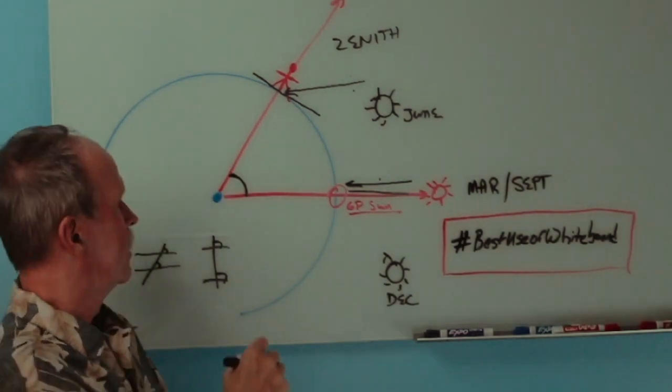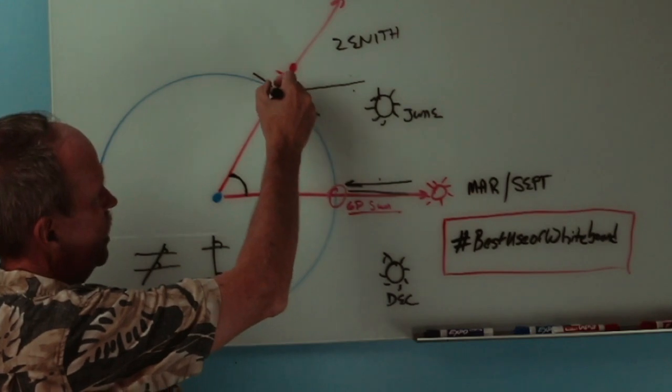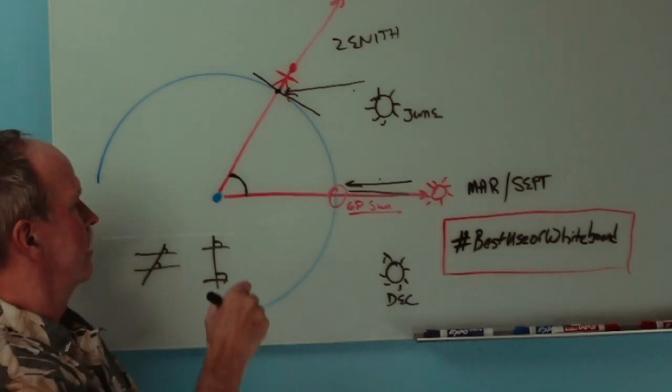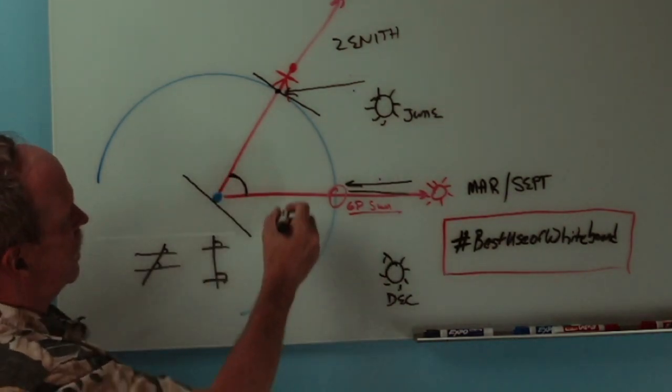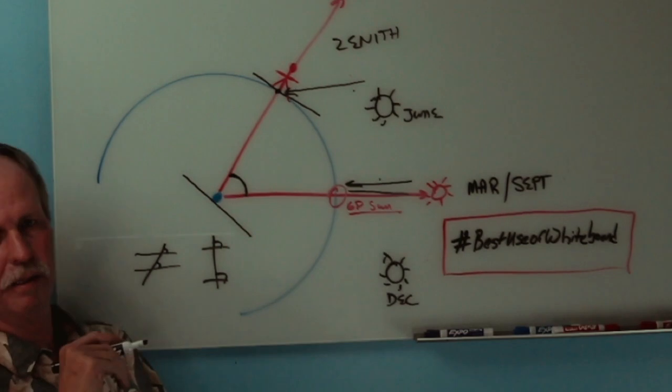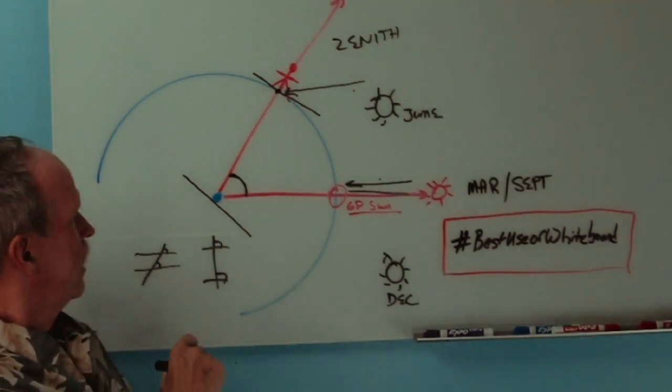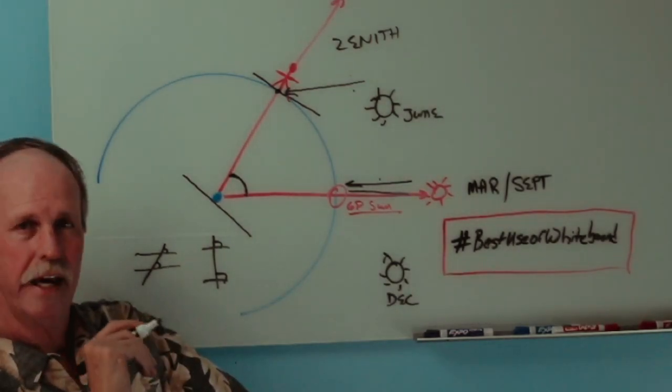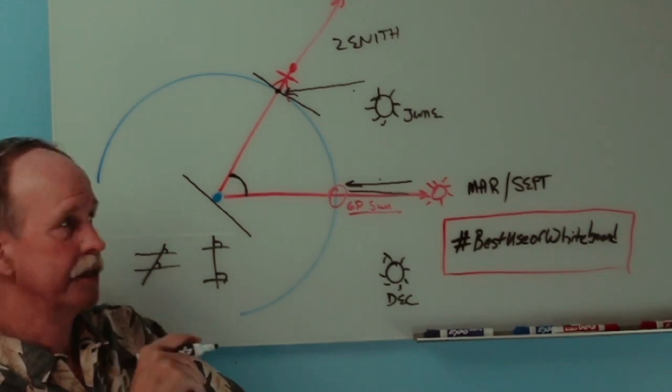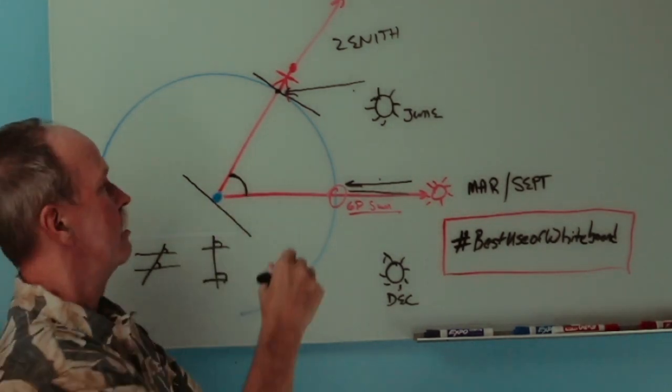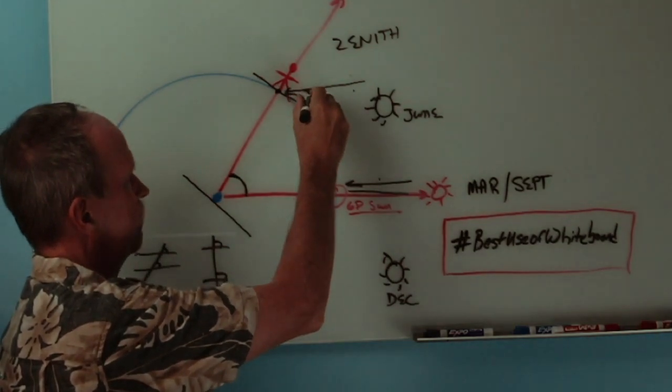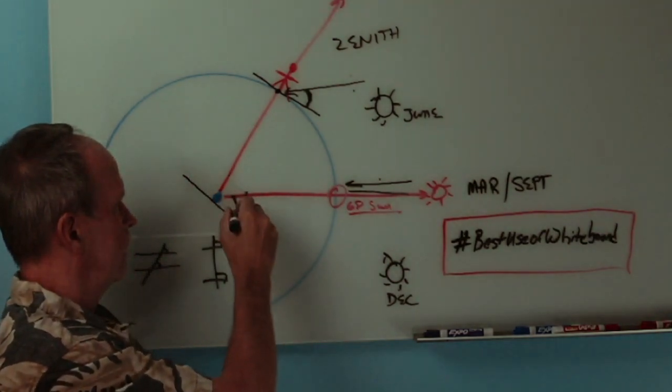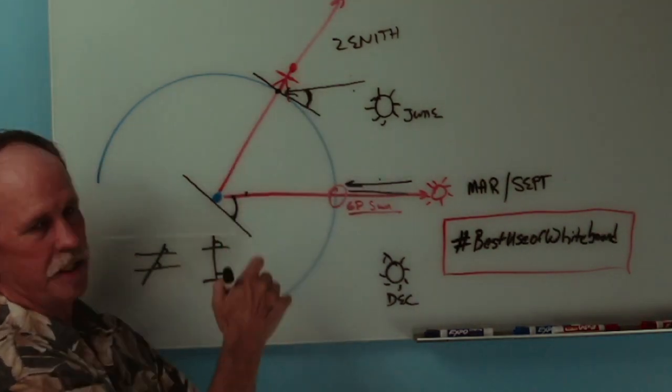So, if we take this line right here, which is a tangent line at our feet to a single point on the surface of the Earth, we can also draw that same tangent line right here, and these two lines are parallel to each other. Now, what does the sextant actually measure? The sextant measures the angle between the center of the celestial body, in this case the Sun, and the horizon. So, it measures this angle right here.